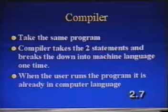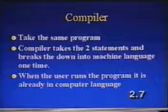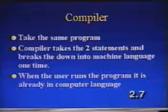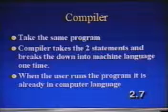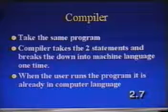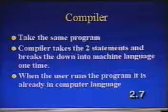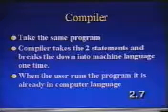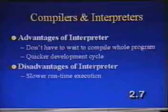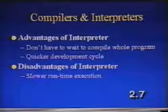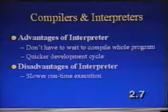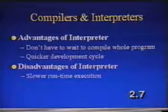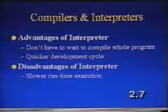If you take that same program and talk about a compiler, the compiler takes those two statements as well as the looping mechanism and breaks that down into machine language one time. This takes time for you as a developer because you have to wait while the compiler breaks it down, but when the user runs the program it's already in machine language and so it can just run, which means it's probably going to run much quicker. The advantages of the interpreter are that you don't have to wait to compile the whole program, giving you a quicker development cycle. However, the disadvantage is that at runtime it can be slower than a compiled application.